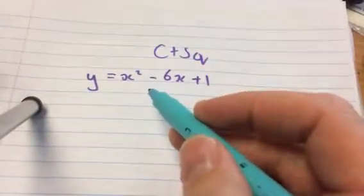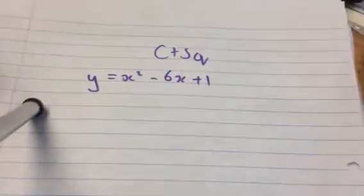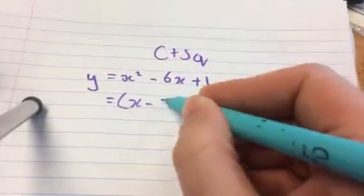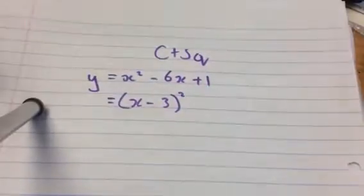We've got y equal to x squared minus 6x plus 1, and as we did in class today, we take half the coefficient of the x term, put that in a bracket and squared.